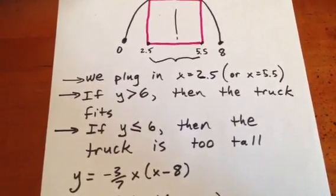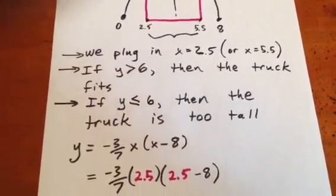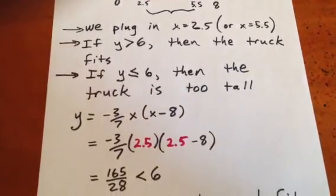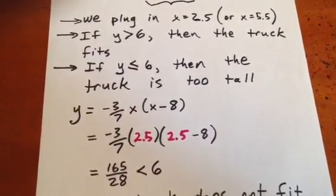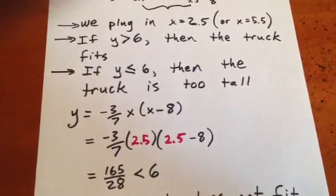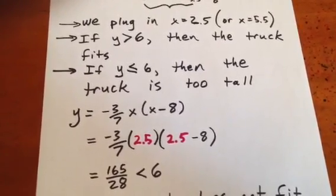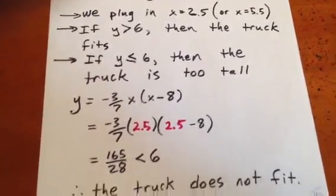So y equals negative 3 sevenths x times x minus 8. We sub in an x value of 2.5, and we get a y value of 165 over 28, which is just less than 6. In other words, the truck was taller than the parabola, so the truck hit the bridge.